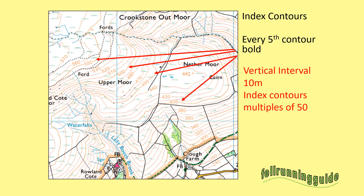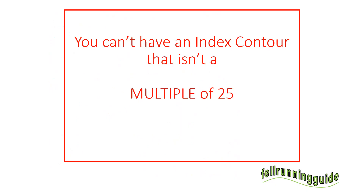Here the index contours go up in multiples of 50. So if you started at sea level, you'd have 50, 100, 150, etc. To sum that up: you can't have an index contour that isn't a multiple of 25. So on an Ordnance Survey map you couldn't look at a thicker contour line and say it's the 330 contour. It could be 325 if there were vertical intervals of 5 metres, or it could be 350, but it's got to be a multiple of 25.